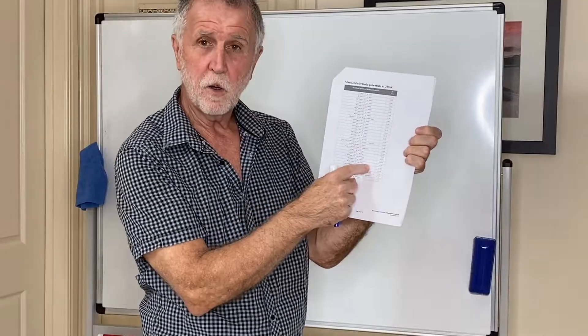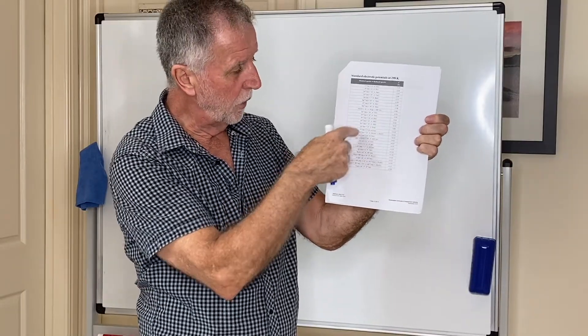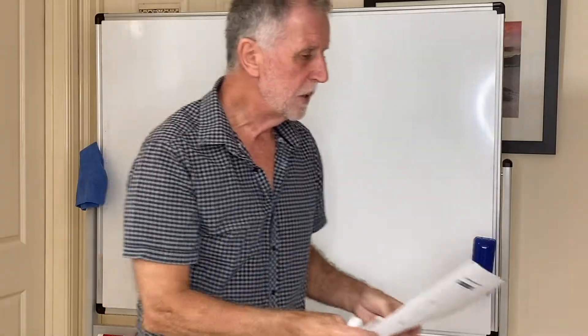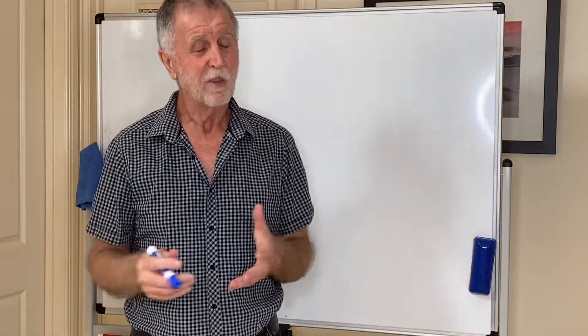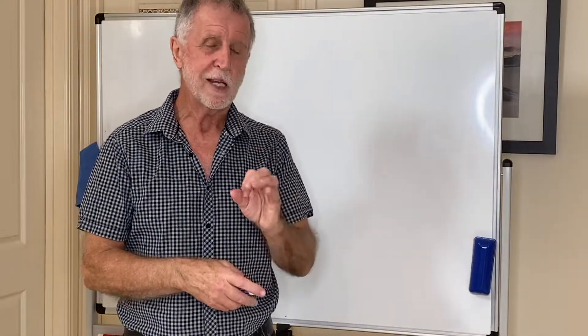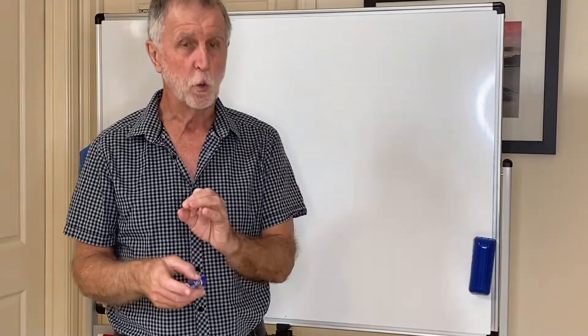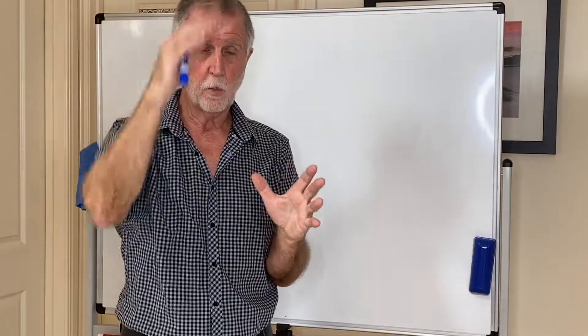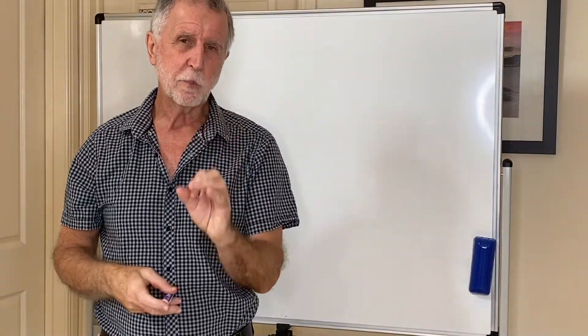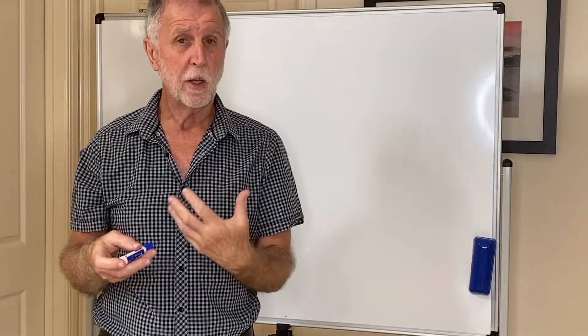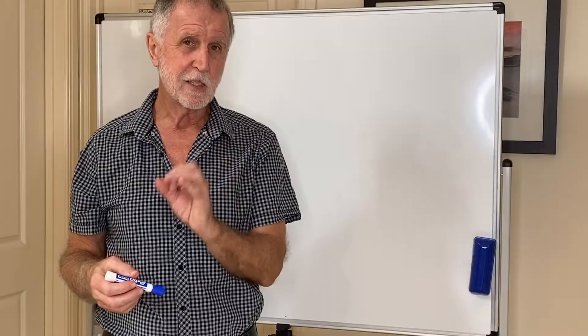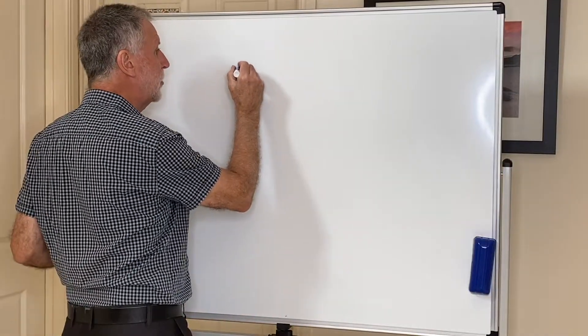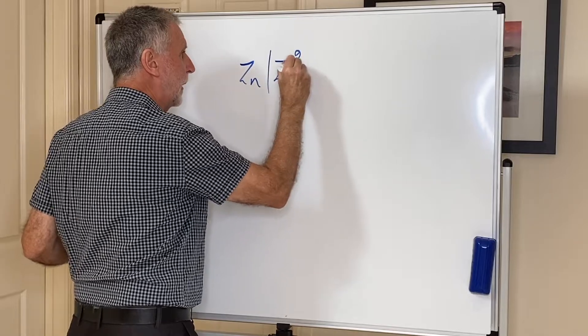So I showed you how to work out the EMF of the cell using the so-called anti-clockwise rule. There is another way of working out the EMF of the cell, and that's using a formula. I don't particularly like it, but to do that you have to write a cell diagram. In the last one I drew a cell diagram showing you the zinc and copper half cells and the electrons flowing from the zinc to the copper and the salt bridge and all that. There is an accepted convention where you can show that in a sort of shorthand way. If I was doing that same combination of half cells, this is what the cell diagram would look like.